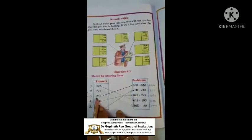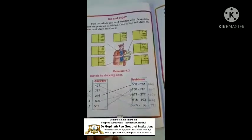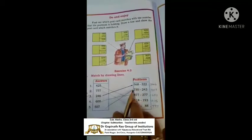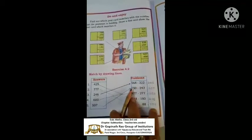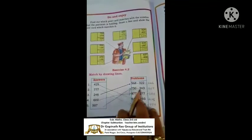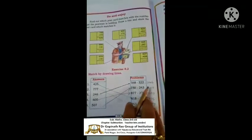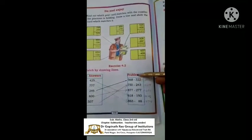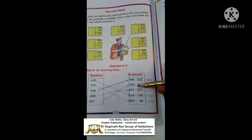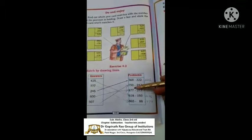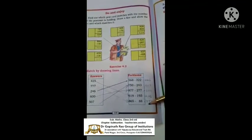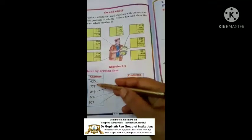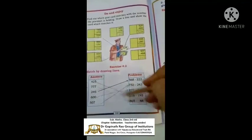For example, see 568 minus 322 — they know the answer is 246, so they have matched it here. But you all don't know the difference answers here, so first you will solve and subtract. For example, 750 minus 243 is 507 — then see where 507 appears and match it. First find the difference of all these problems, then find the number where it appears and match it.